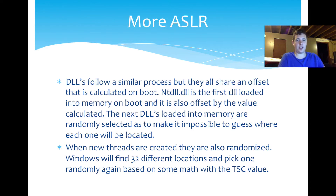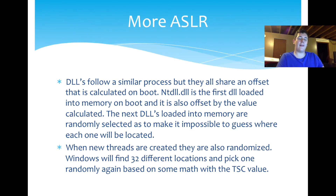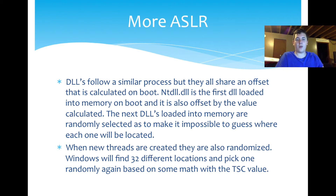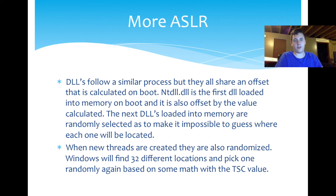DLLs follow a similar process, but they all share an offset calculated when the system starts up. NTDLL is the first DLL loaded into memory on boot and uses that same offset value, calculated by taking the TSC and doing a bit of math on it. NTDLL controls the kernel function, so it has to go first. The next DLLs loaded after NTDLL are randomly selected — Windows has a list of DLLs it needs to load on boot, and after loading the kernel DLL, it randomizes the order it loads the rest. Even if you found where NTDLL was and based your offset on that, you'd never be able to predict where every other randomly loaded DLL ended up.